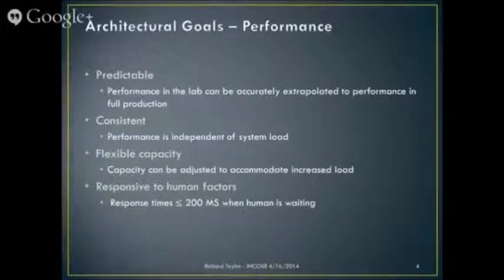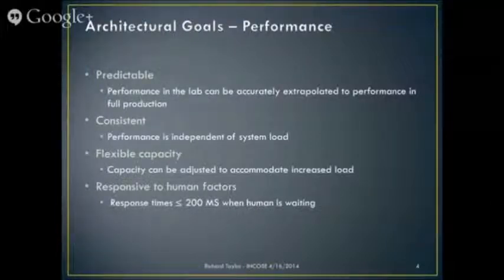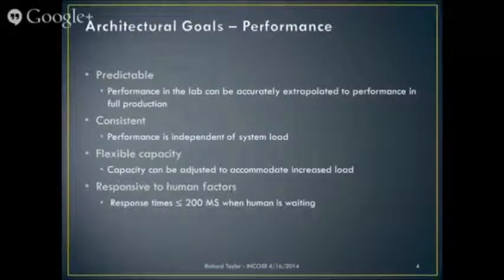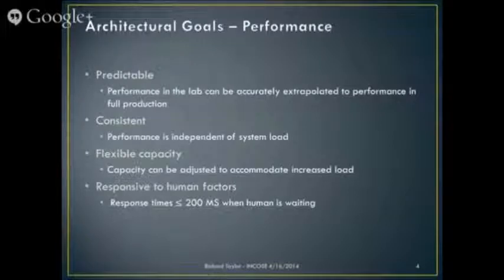Consistency. You'd like to be able to say that the performance is not just good when there are very few people using the system, and then as it gets loaded up the performance gets worse. You'd like a consistent performance regardless of load. These are the objectives. Flexible capacity: one of the characteristics of a successful system is that it will be used more than it was planned to be used, because there's typically a pent-up demand which has been unsatisfied because of however the problem was solved in the past. So if it's going to be successful, it's got to be capable of going beyond what anybody ever saw as the volume that was going to be demanded.